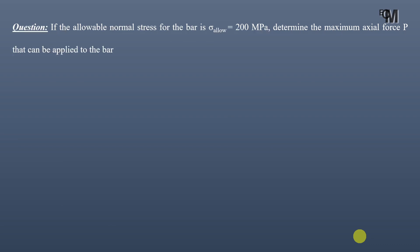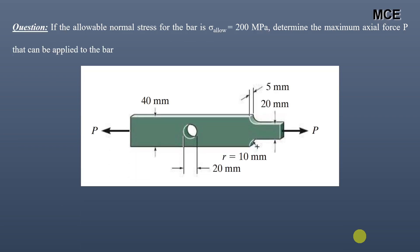Hello and welcome back to the Master Civil Engineering channel. In this video we will learn how to find the stress concentration factor for an axially loaded bar to find the maximum allowable force that can be applied to the bar. The given problem states that if the allowable normal stress for this bar is 200 MPa, we have to find the maximum axial force that can be applied to the bar.